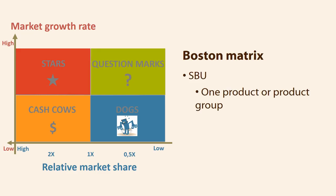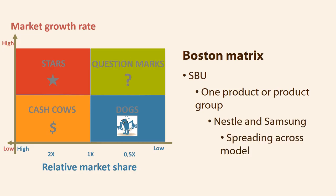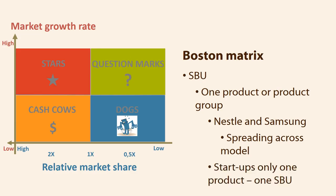An SBU may consist of a product or product group. Nestle and Samsung have many SBUs, and both companies are spreading their SBUs across all fields of the model. There are also companies that have only one SBU — startups often offer only one product and thereby only have one SBU.